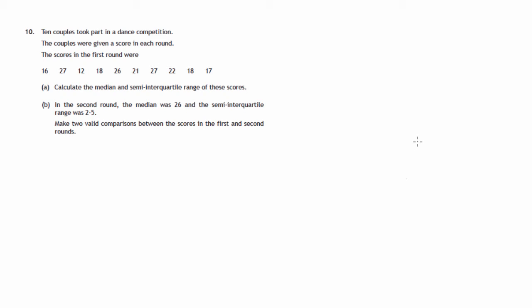This is question 10 from paper 1 of the 2015 National 5 SQA maths exam. I've given information about a dance competition with 10 first round scores, and we're asked to calculate the median and the semi-interquartile range. Then there's more information about the second round, where we're told the median and the semi-interquartile range and asked to compare the two rounds.